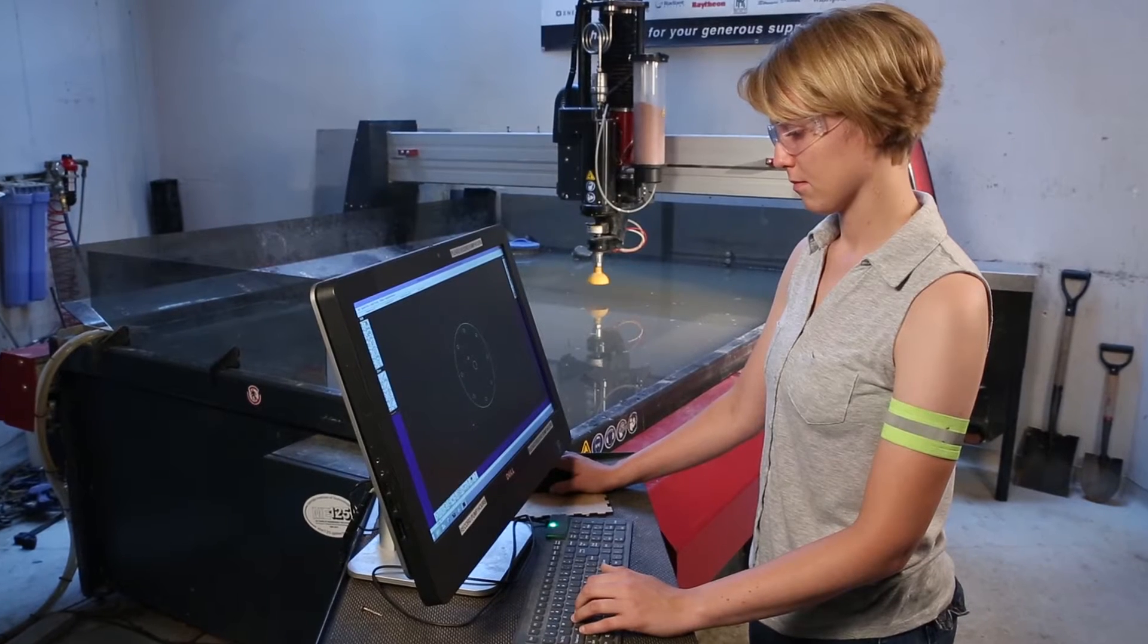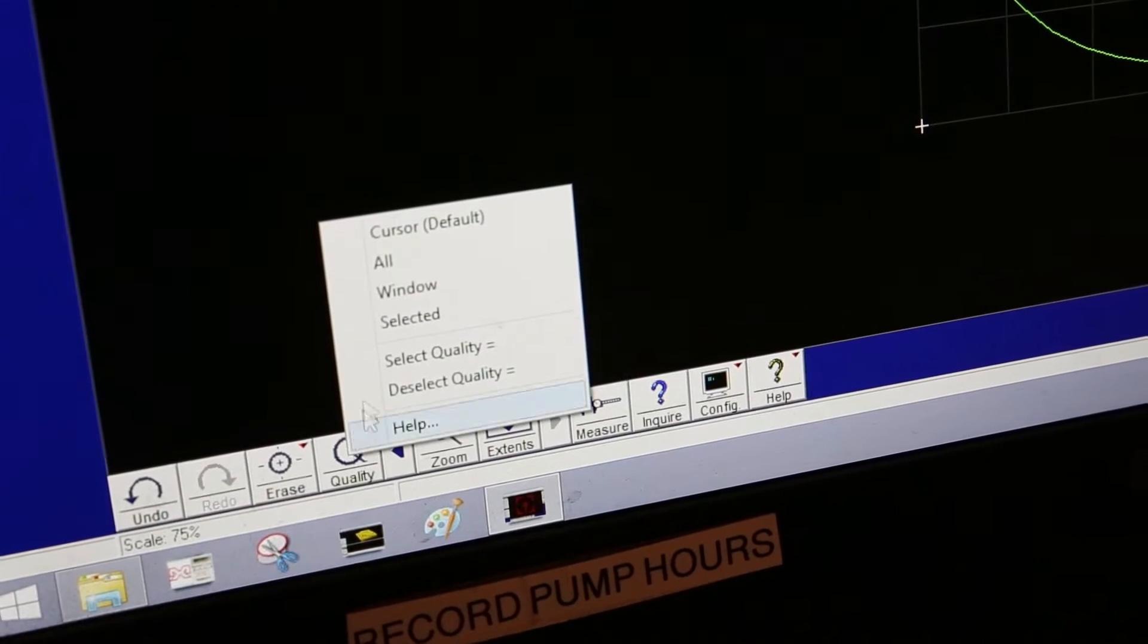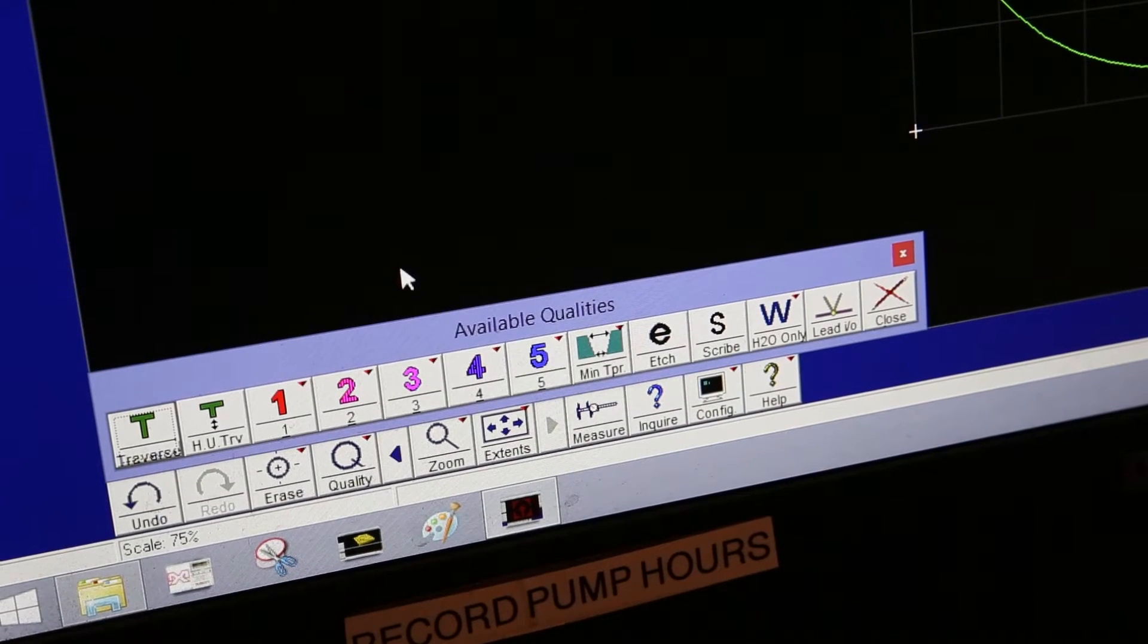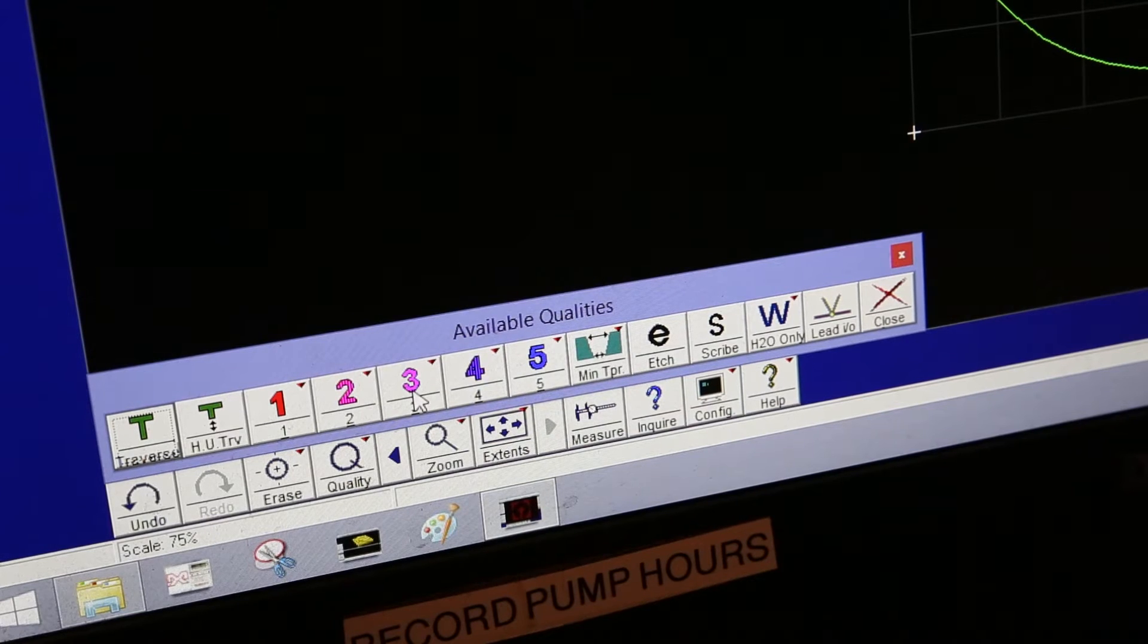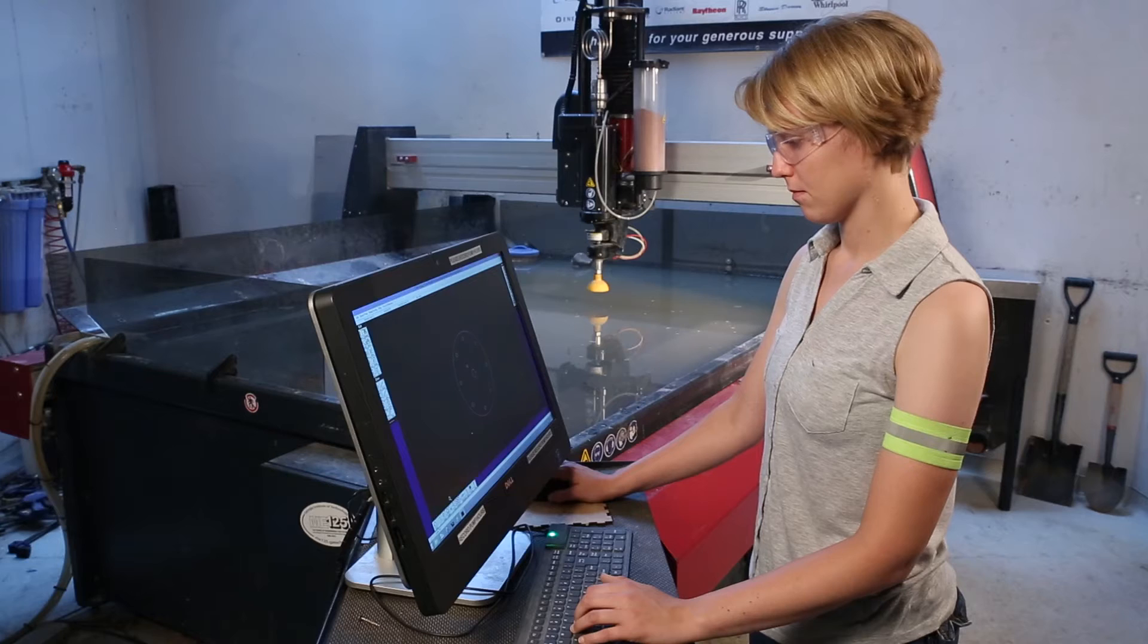Next, set the quality of your cut. This represents how smooth the edges will be when the cut is completed, with 1 being the roughest and quickest, and 5 being the smoothest and slowest. Using the WaterJet, we almost always use Quality 3 in order to make our cuts.